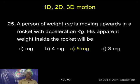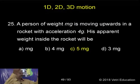A person of weight mg is moving upward in a rocket with the acceleration of 4g. The rocket moving up from the acceleration of 4g.